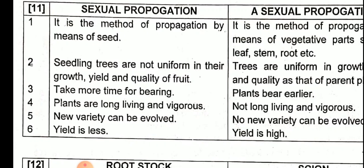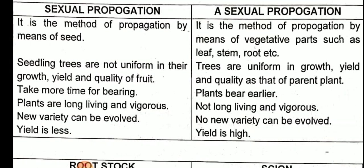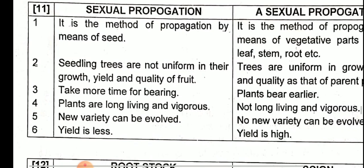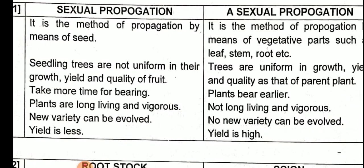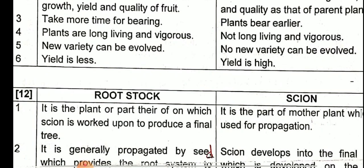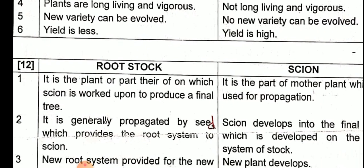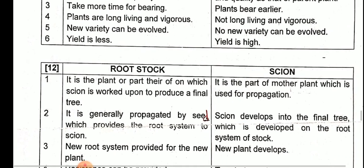Fifth point: in sexual propagation, a new variety can be evolved, because root stock is prepared by seed and new characteristics can emerge. In asexual propagation, no new variety can be evolved. Sixth point: in sexual propagation, yield is less, while in asexual propagation, yield is high.